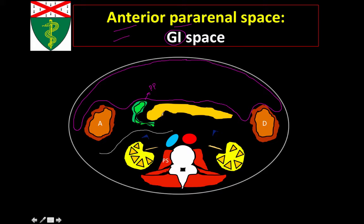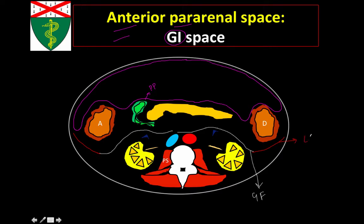Gerota's fascia is going to be right over the kidneys on the right side and on the left side. This white layer is known as Gerota's fascia, or the anterior pararenal fascia. And in red, I'm going to draw the continuation of the anterior pararenal fascia as it goes laterally — the lateral conal fascia, seen on the right and on the left.